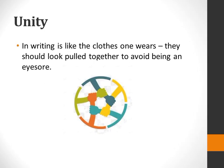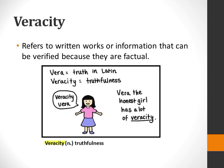U for Unity: In writing, unity is like the clothes one wears — they should look pulled together to avoid being an eyesore. V for Veracity: Refers to written works or information that can be verified because they are factual.